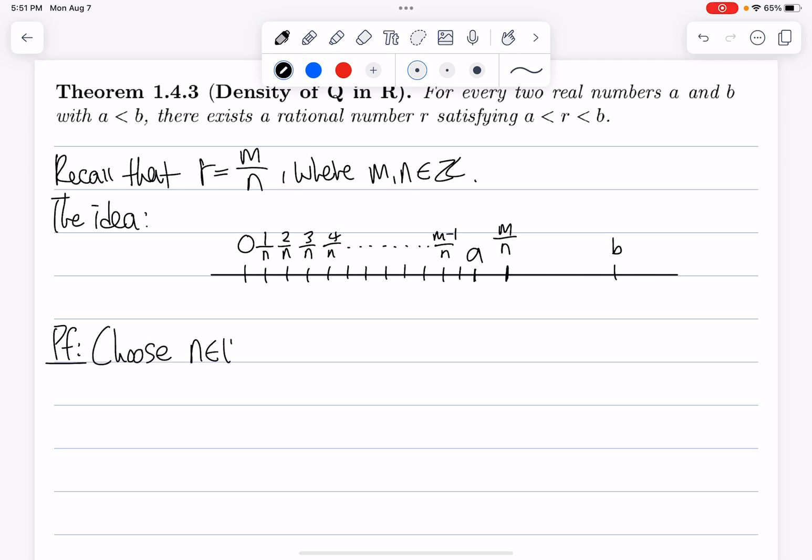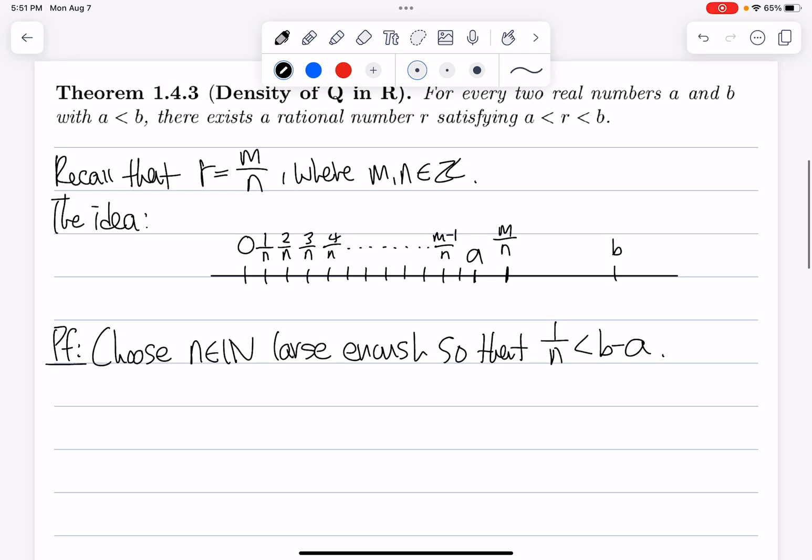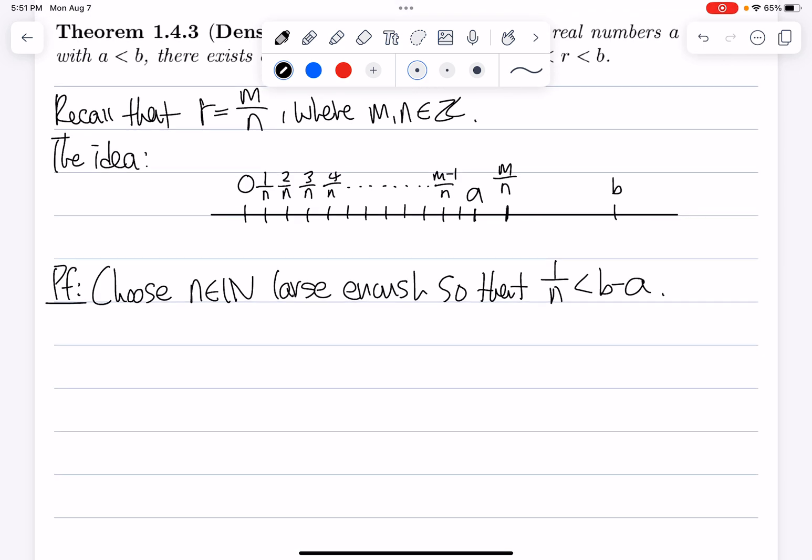So the proof goes like this: Choose N in the natural numbers large enough so that 1 over N is less than B minus A. We're going to choose N large enough so that each increment of 1 over N is going to be less than the distance between the two real numbers we are given. And this is possible to choose because by the Archimedean property, given a real number greater than 0, there exists a natural number N such that 1 over N is less than that real number. And recall that our assumption was that A was less than B, so B minus A is going to be greater than 0. So our choice of N is justified.